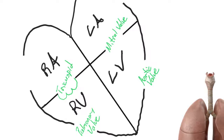There is a semi-inappropriate mnemonic for memorizing these valves — taught to me by my first EMT instructors. The way they taught it was TPMA: Tricuspid, Pulmonary, Mitral, and Aortic — 'toilet paper on my ass.' However you remember them, you need to know where they sit in the heart and their roles. You'll have patients where the provider mentions mitral valve regurgitation, and you need to picture that valve and think about how it affects blood flow through the rest of the heart and body.